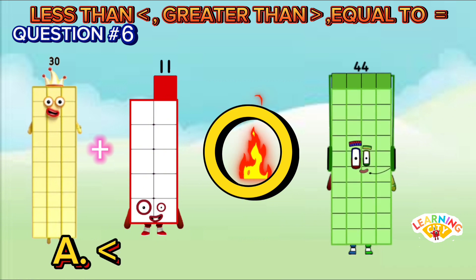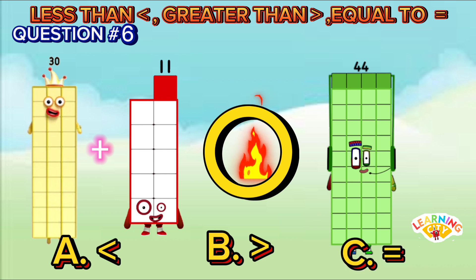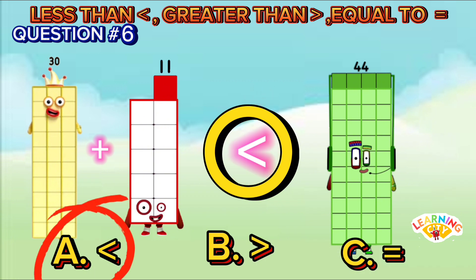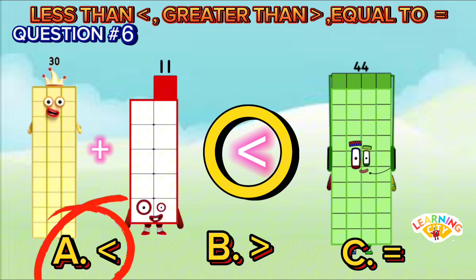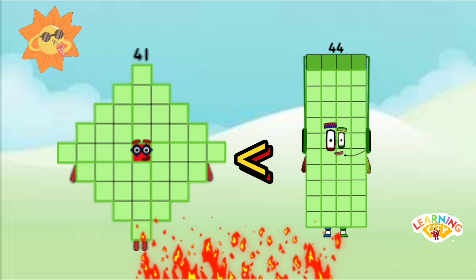30 plus 11 and 44. Is it A less than, B greater than, or C equal to? The answer is A less than — 30 plus 11 equals 41, and 41 is less than 44.